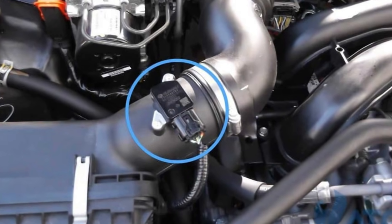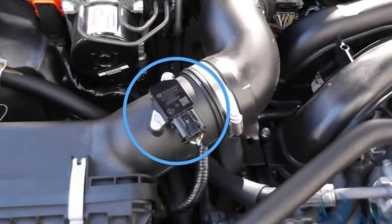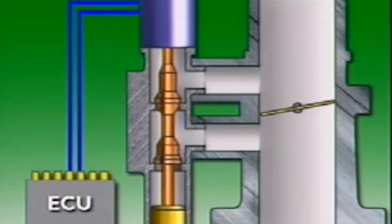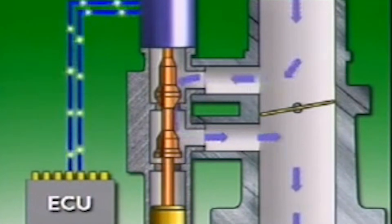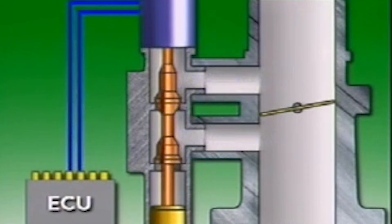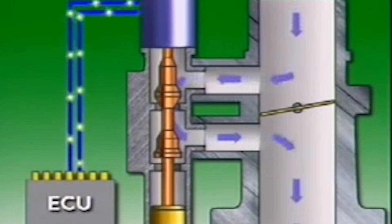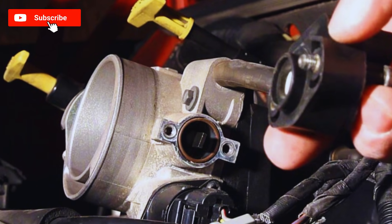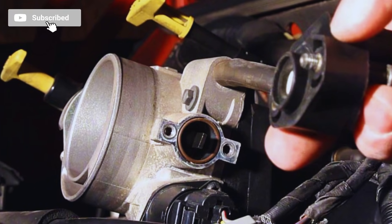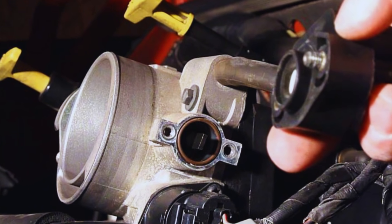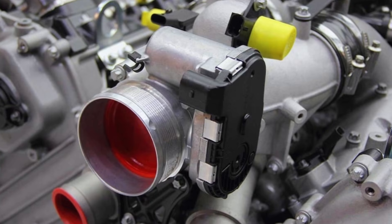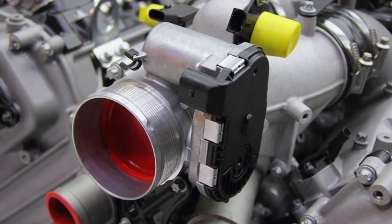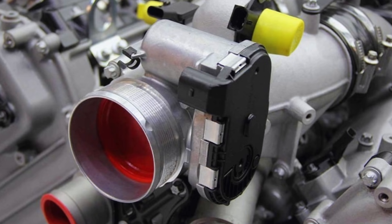For instance, a faulty MAF sensor might under-report incoming air, causing the ECU to inject too little fuel, while a malfunctioning O2 sensor could lead to an overly lean or rich mixture. Similarly, if the throttle position sensor sends erroneous signals, the ECU may misinterpret the throttle status, and a failing engine coolant temperature (ECT) sensor can affect fuel calculations, particularly when the engine is cold.